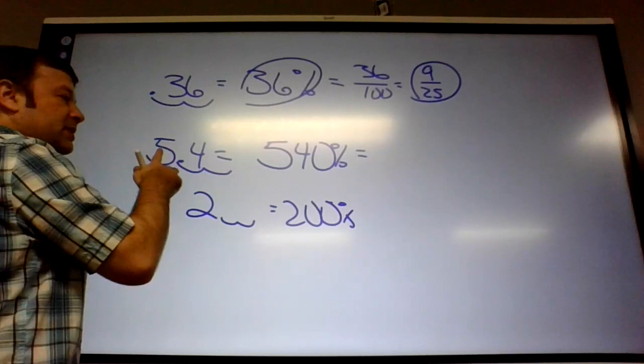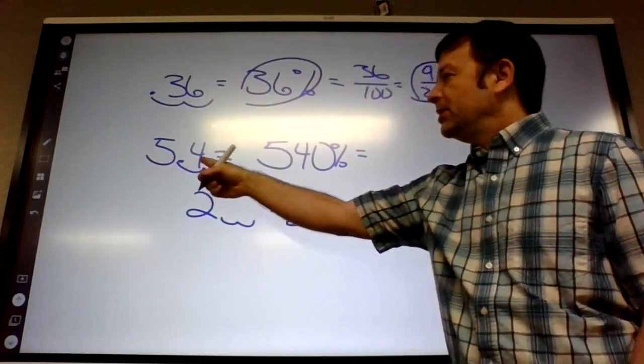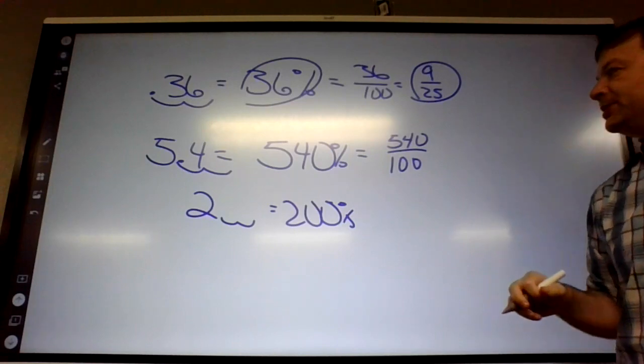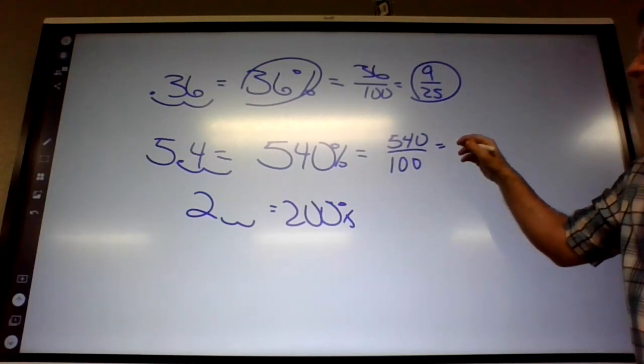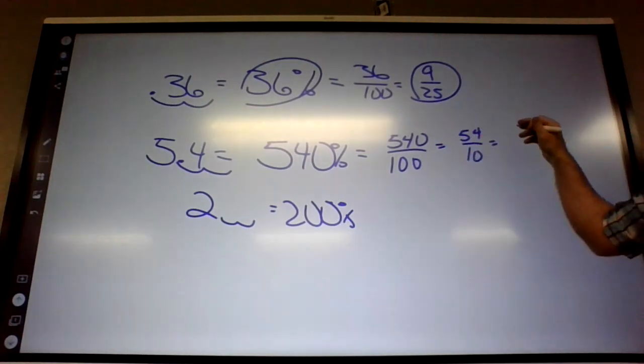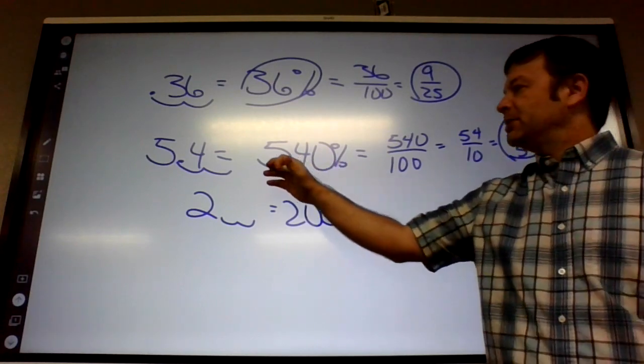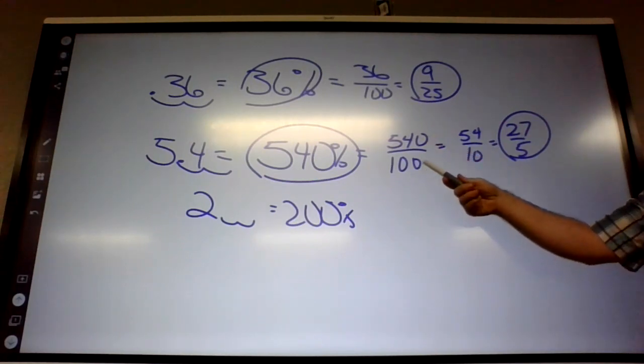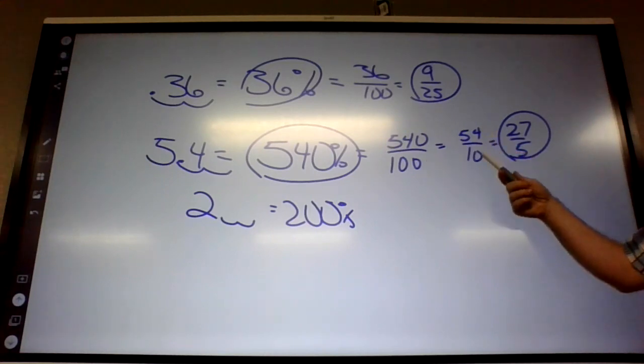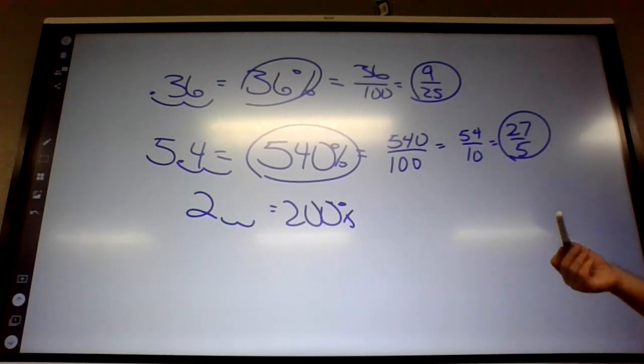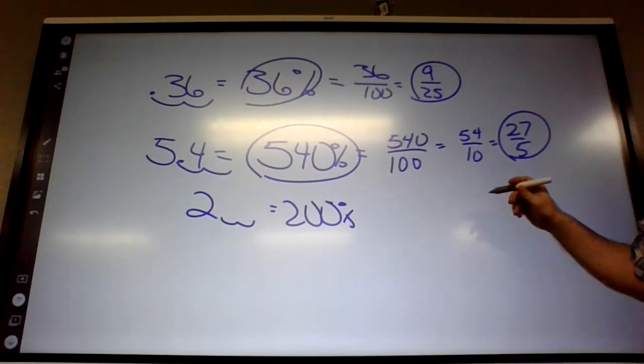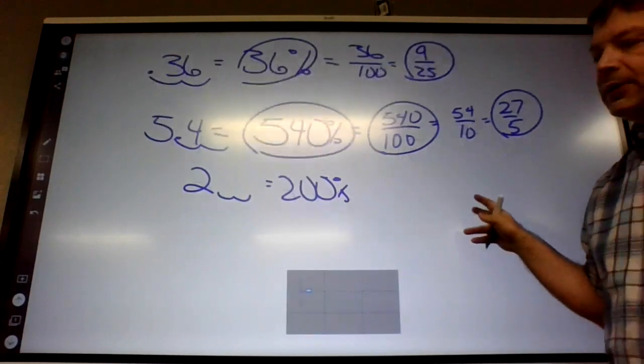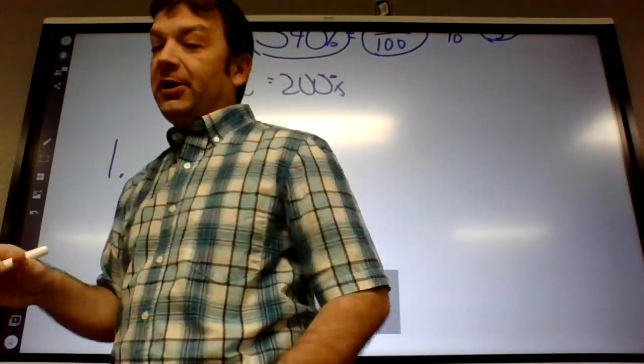And what would it be as a fraction? You could say 540 over 100, but yeah, you need to reduce that. If we divide by 10, it would look like that. And if we divide that by 2, it would look like that. So that would be the fraction. You just have to kind of look at it. They both end in zero, so they're divisible by 10. And these are both even, so that means they're divisible by 2. Or you can use a calculator and help you figure it out. If you plug in your calculator this and just hit as a fraction and hit equals, it should automatically reduce it.